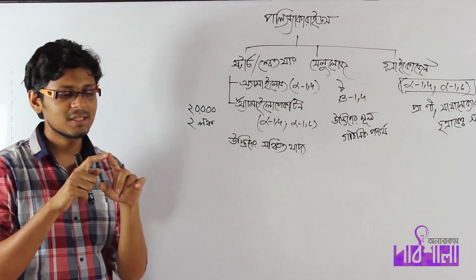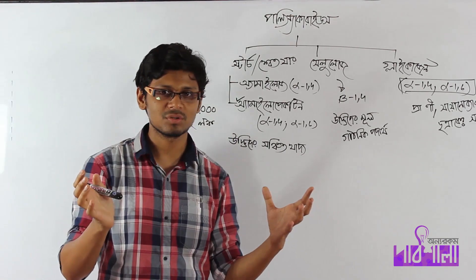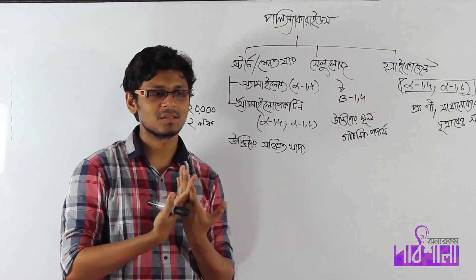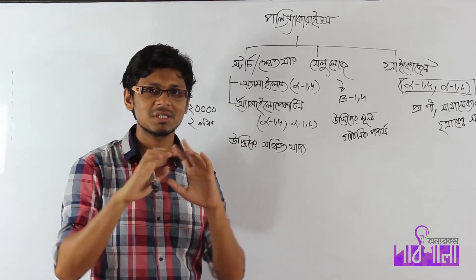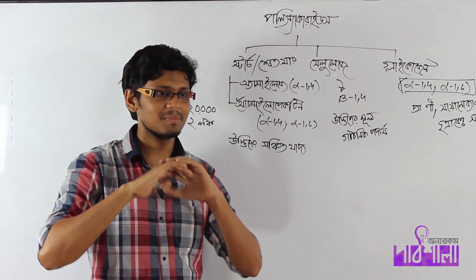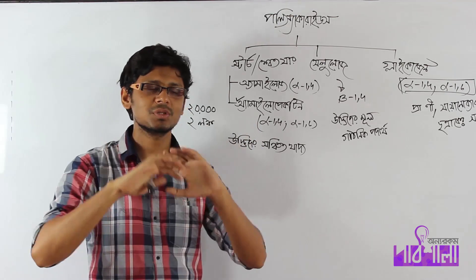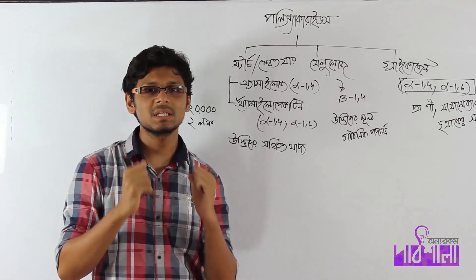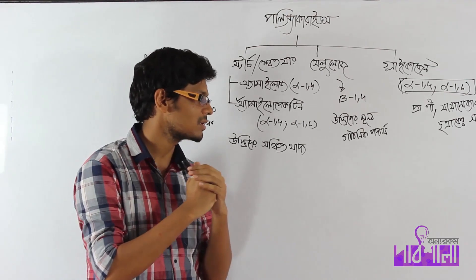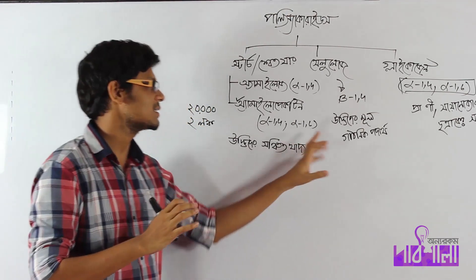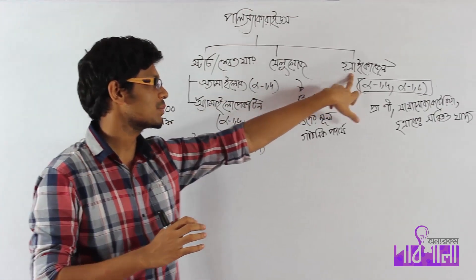Cellulose contains a lot of glucose units. Every glucose unit is connected, making it a long chain. This glucose structure can be maintained within the cell.